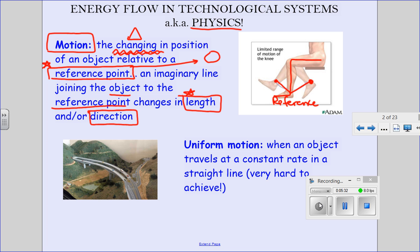The first type of motion we're going to discuss is called uniform motion. Does anybody know what the word 'uniform' means? Like, you're on a sports team and you wear uniforms — why do you wear them? You play on a hockey team, Ryan — why do you guys wear uniforms? Because you're on the same team. So the word 'uniform' is talking about being the same. Uniform doesn't just apply to clothes; it applies to objects and motion as well. The word uniform means that things are the same, things are consistent.